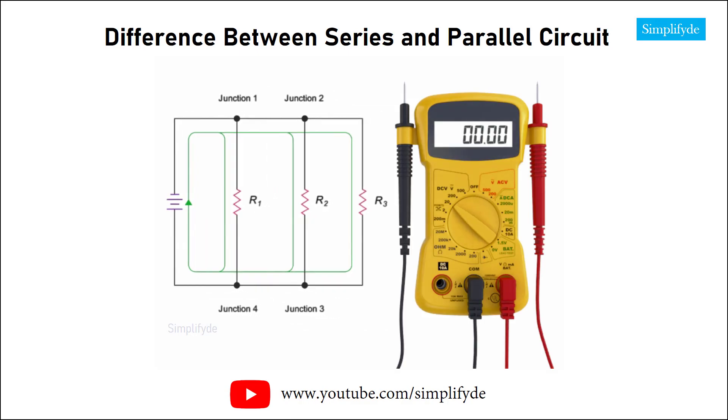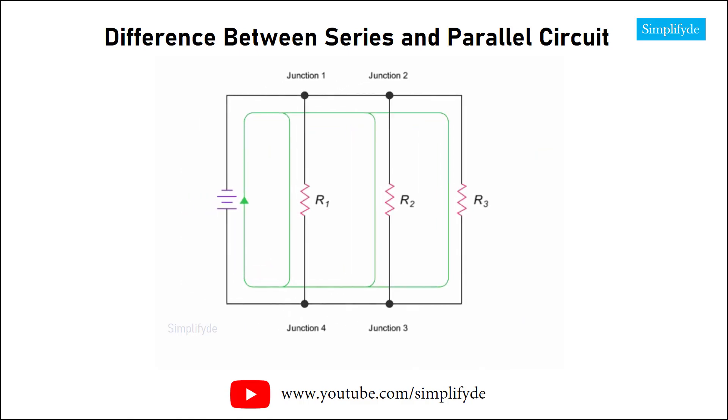An important difference between a series and a parallel circuit is that the voltage in the parallel circuit is the same across all branches. The current along each branch will vary, but when added together, these various branch currents will equal the current at the source.